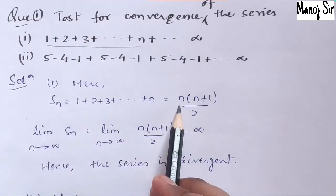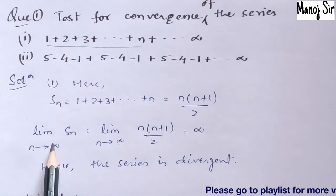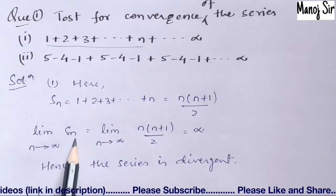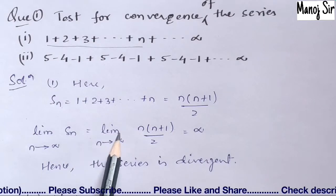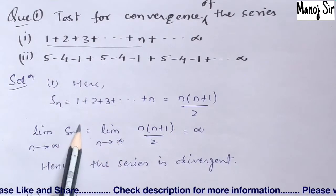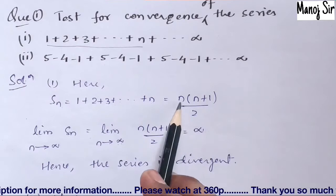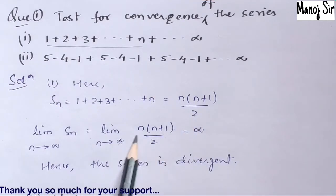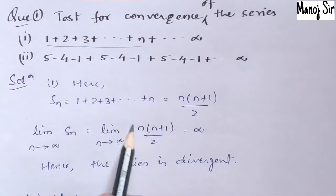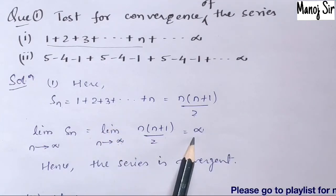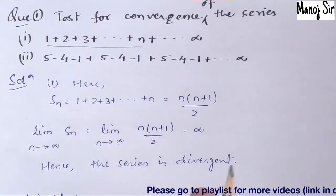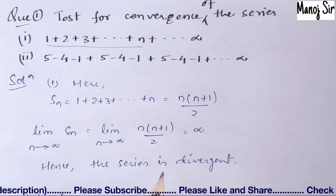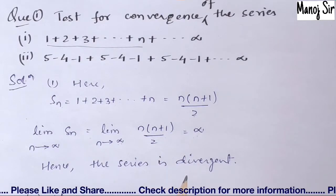So we have Sn = n(n+1)/2. Now we need to find the limit of Sn as n tends to infinity, which equals the limit of n(n+1)/2 as n → ∞. If you put infinity in place of n, you are going to get the limit as infinity.